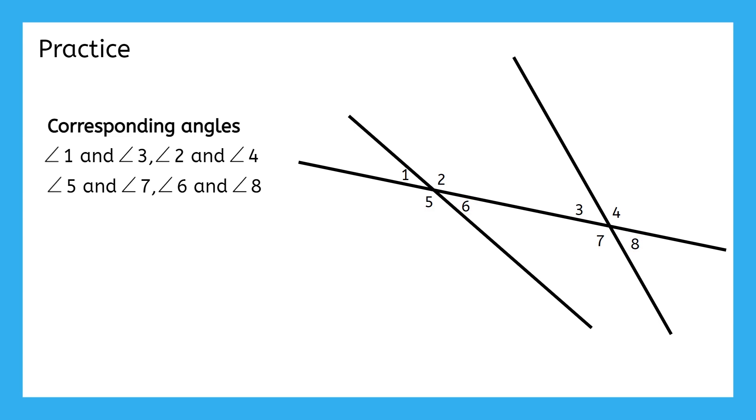The vertical angles share their vertex, but no rays, so they are across from each other in each intersection. Here, we have angles 1 and 6, 2 and 5, 3 and 8, and 4 and 7.